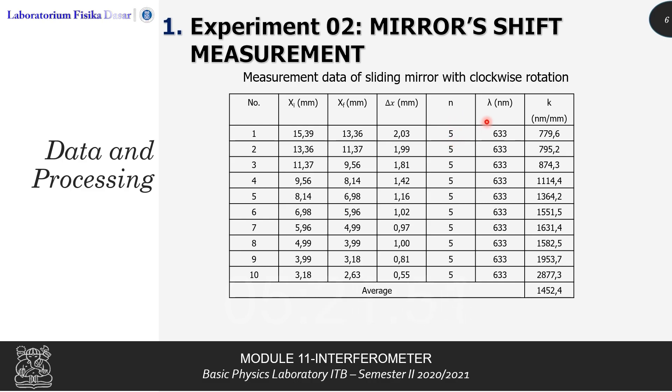After that, we already knew the lambda of our light wave, which is 633 nanometers, and with the formula in the slides before, we can calculate the value of k. For data number one, it's 779.6. We're going to take as many data as we can. However, the data is better to be taken between the range of 20 millimeters to 5 millimeters. Outside of that range, the sensitivity of the instrument will get worse.